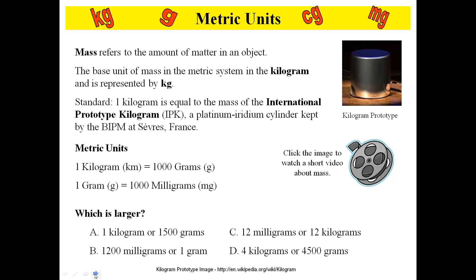Mass refers to the amount of matter in an object. The base unit in the metric system is the kilogram. A lot of people want to say the gram, and we're going to be using grams quite a bit, but the kilogram is the base unit. The kilogram is equal to the mass of the international prototype kilogram kept in France.